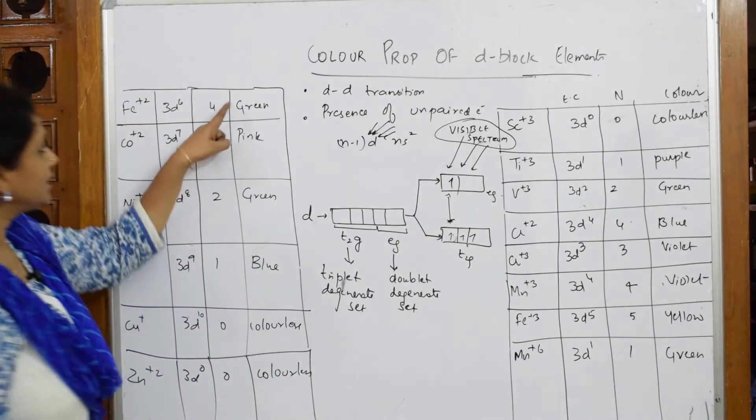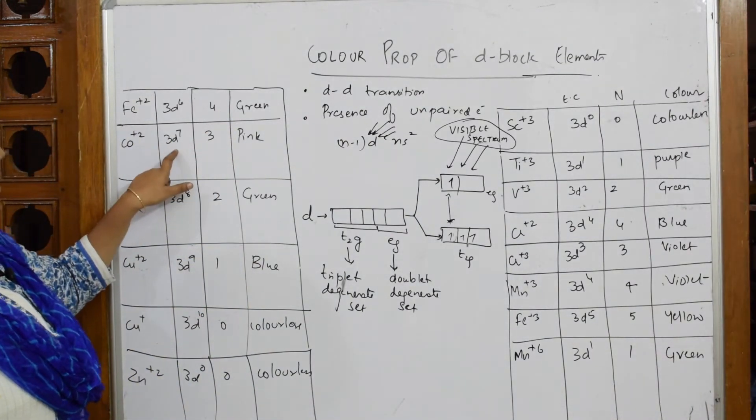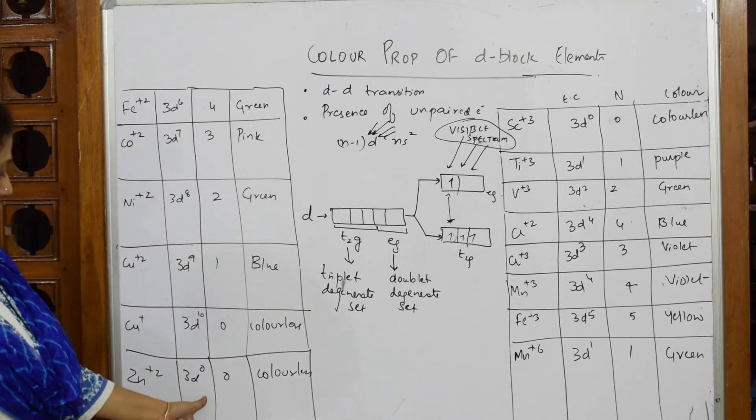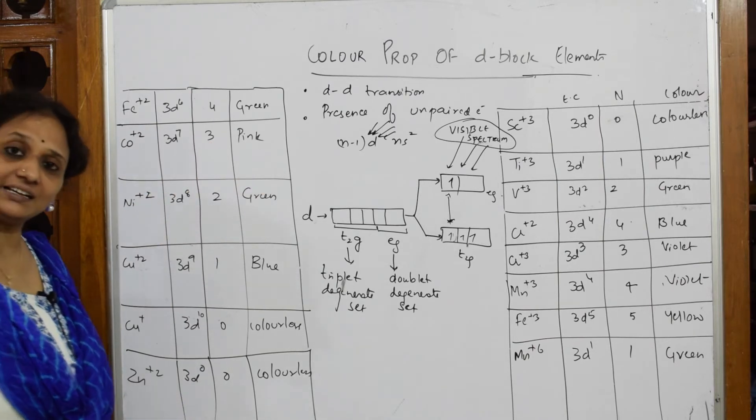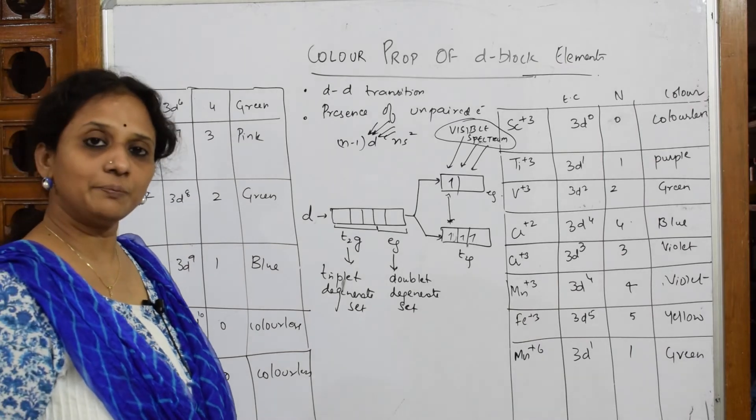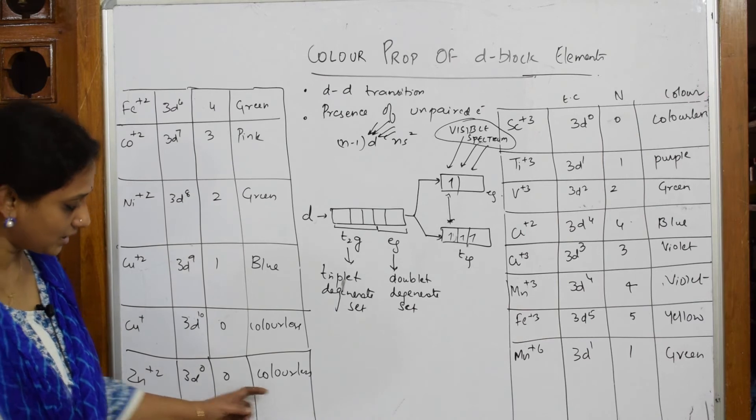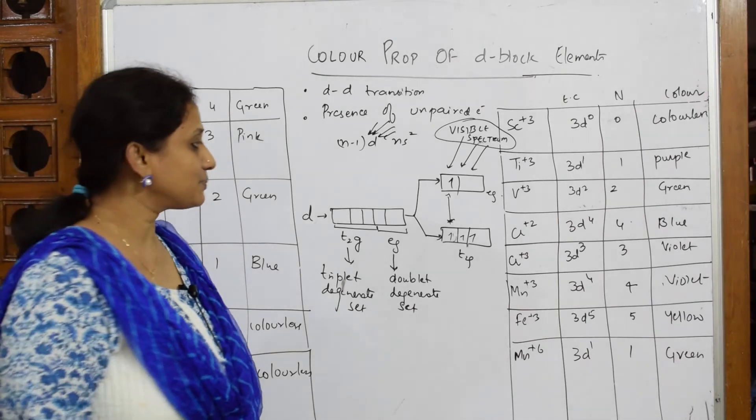Based on the number of unpaired electrons, each metal atom is going to show different colors. Here 3d⁷ - number of unpaired electrons are 3, so it's pink in color. If I come to zinc: 3d¹⁰ 4s² - there are no unpaired electrons, all are paired. Number of unpaired electrons is zero and it is colorless.